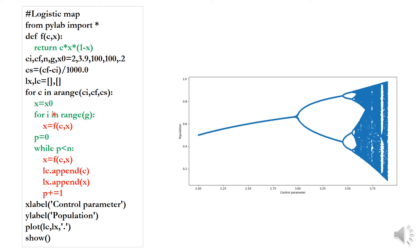By these iterations, we find the first attractive point. Initially, the population x equals x0, but after 100 iterations the result is the attractive point for that value of c. For c less than 3 there is one attractive point, while for c greater than 3 there will be more than one attractive point.